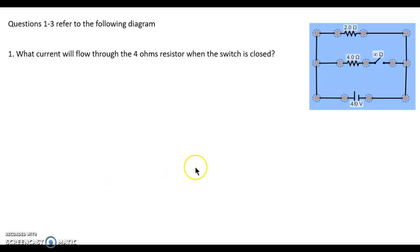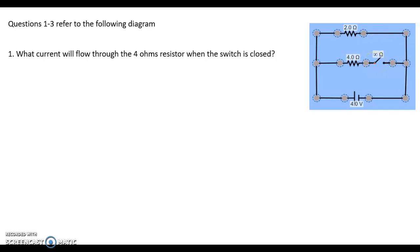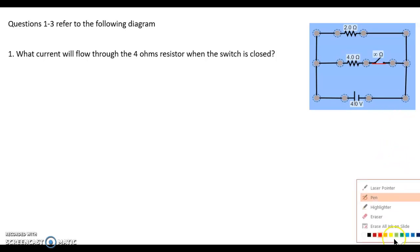We have the circuit question one, and the question was: what current will flow through the four ohm resistor when the switch is closed? If we close that switch, in this case we have the switch open, so you have to know which rule will be followed here. Before we close the switch, you have to know that no current will flow through this resistor.